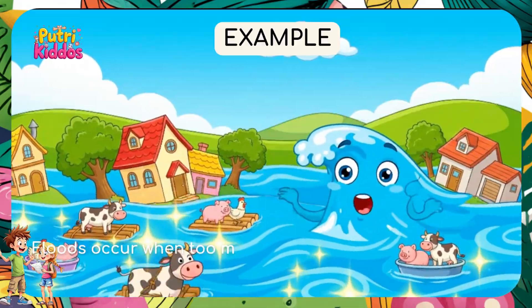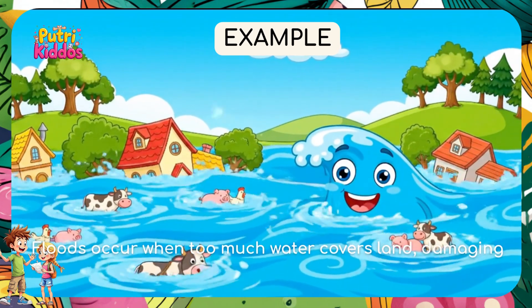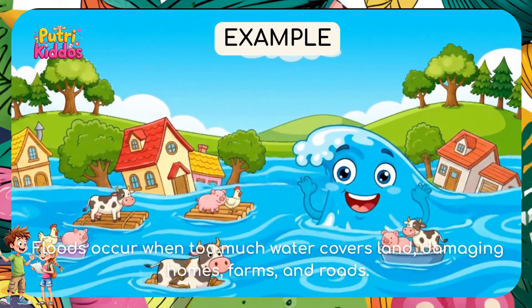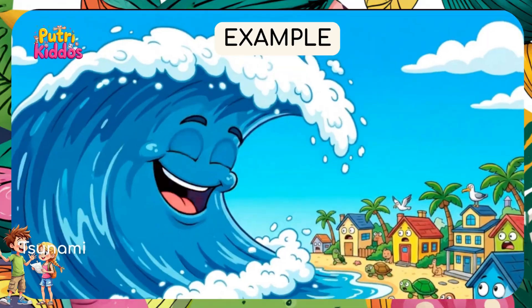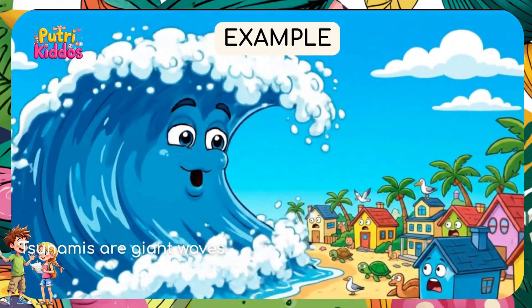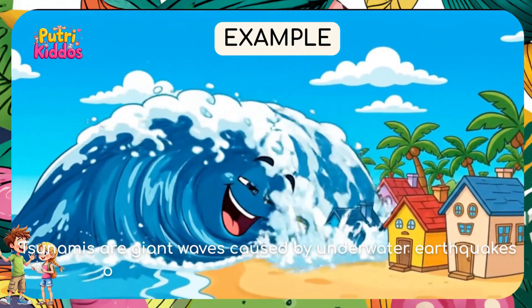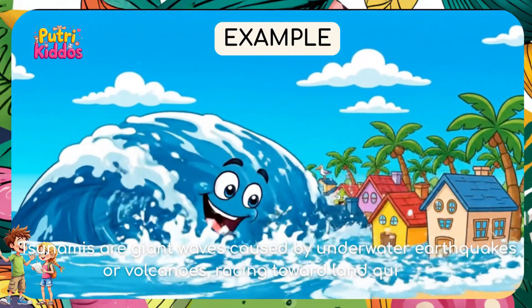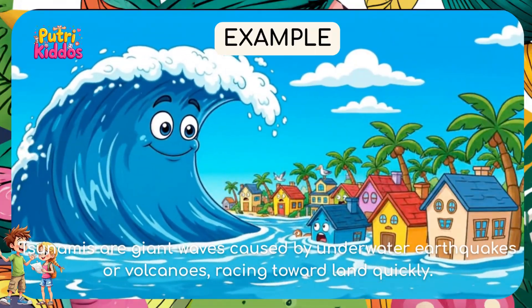Example 1: Floods occur when too much water covers land, damaging homes, farms and roads. Example 2: Tsunamis are giant waves caused by underwater earthquakes or volcanoes, racing toward land quickly.